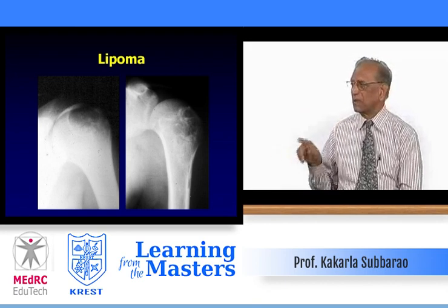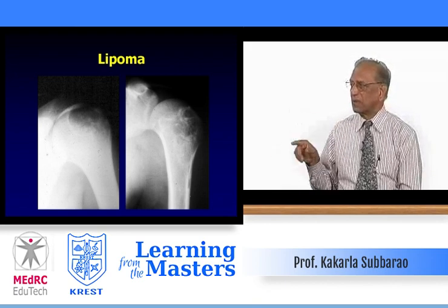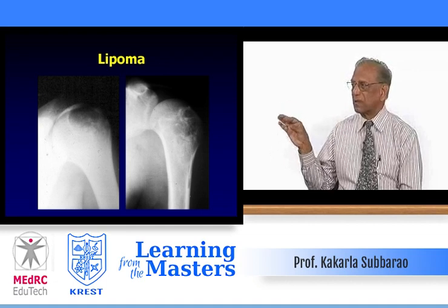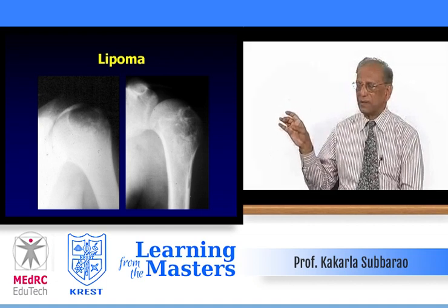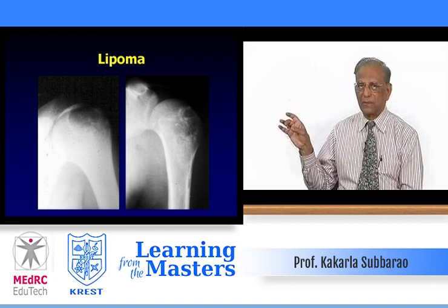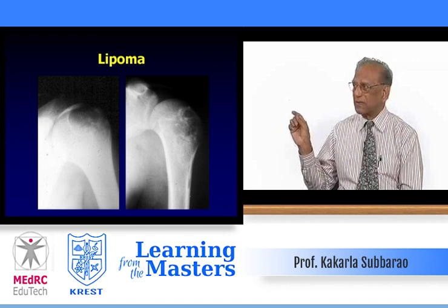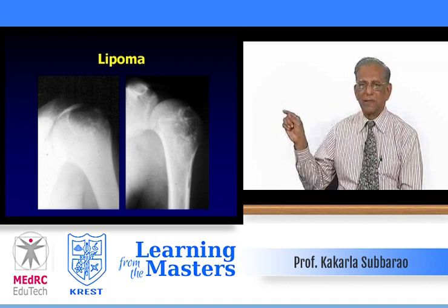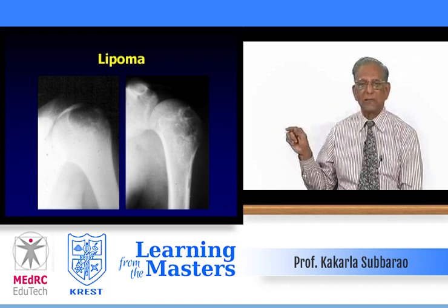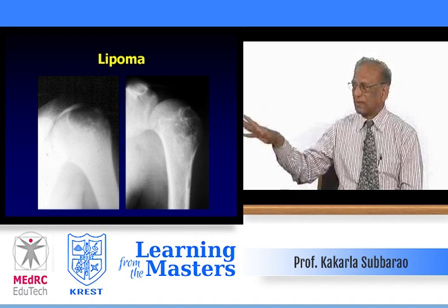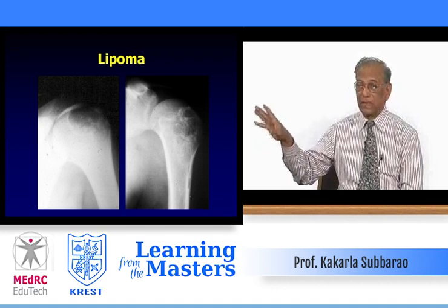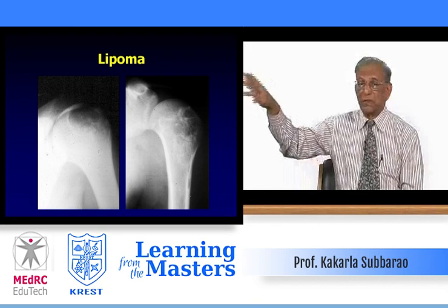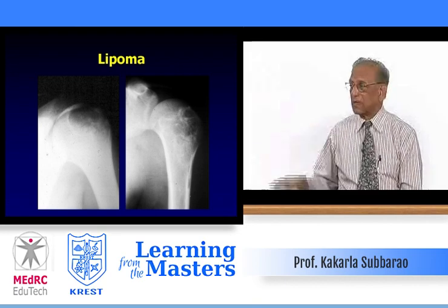Two children — on the left side, a younger child with marked sclerosis of the metaphysis which is also expanded. This is healed rickets due to vitamin D overdose or vitamin D intoxication. The cupping portion has excessive sclerosis, while the normal epiphyses are osteoporotic because calcium is drawn into the metaphyseal region. On the right side, metaphyseal dysplasia with irregularity in the metaphysis — there is no cupping, and the finding is bilateral and symmetrical.